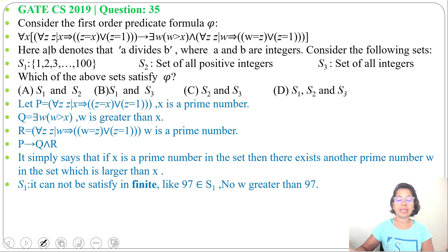Next, S3, the set of all integers. It contains both positive and negative numbers. So whatever value we take for x, there is another w which is prime and which is greater than x. So S2 and S3 satisfy φ while S1 doesn't satisfy as it is finite.